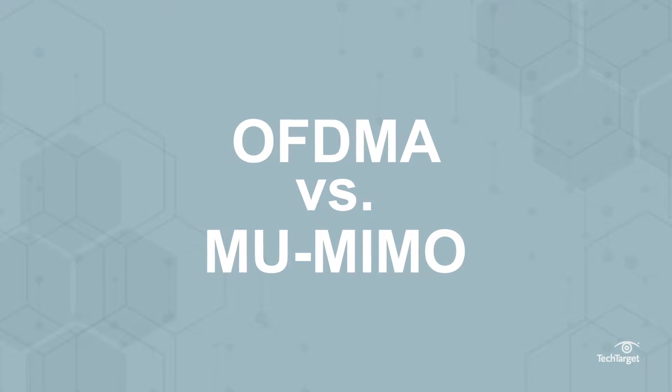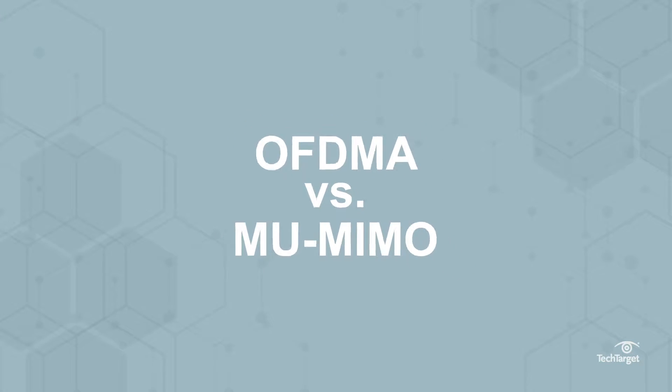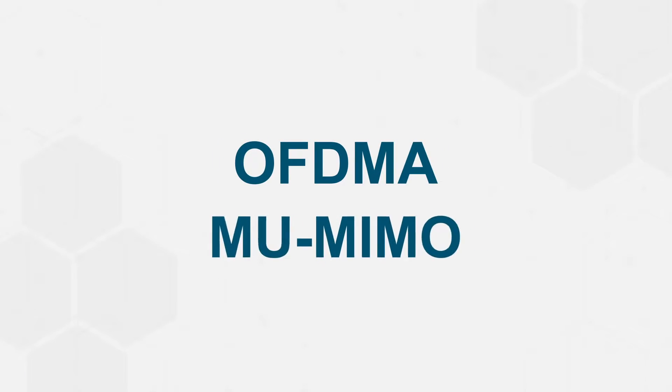What's the difference between OFDMA and Multi-User MIMO in Wi-Fi 6? The Wi-Fi 6 standard relies on two key features that enable the most efficient wireless networks to date: OFDMA and Multi-User MIMO.